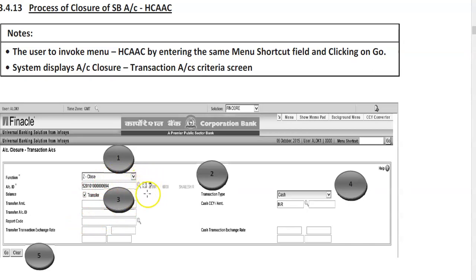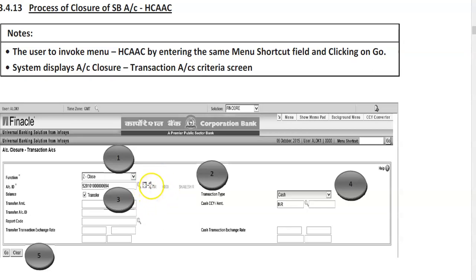Next to the searcher icon is a Details icon, and next to that is a Signature Verification icon. If you want to view the customer's signature, click on it — whatever signatures have been uploaded in the system for that account will appear on your screen, and you can verify from there.